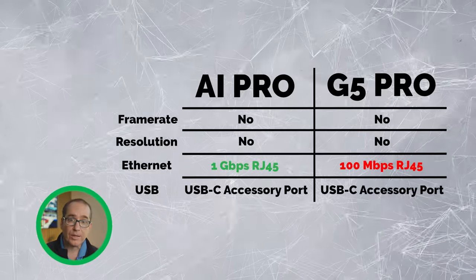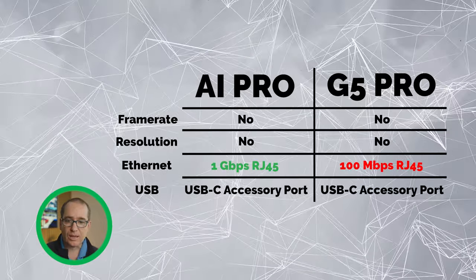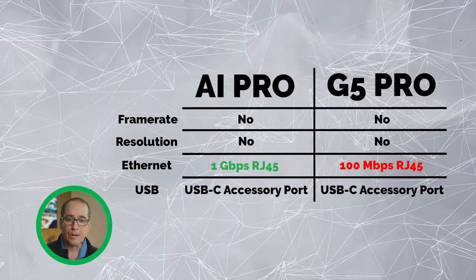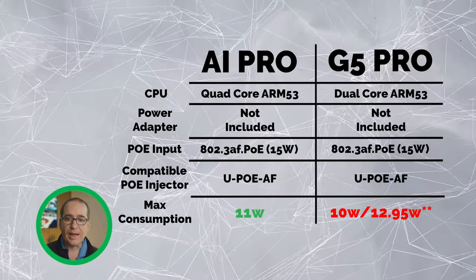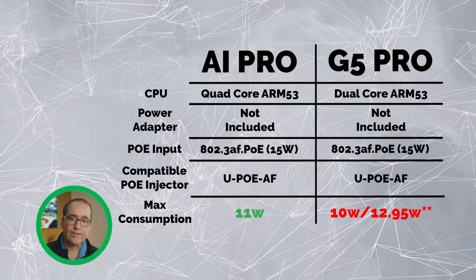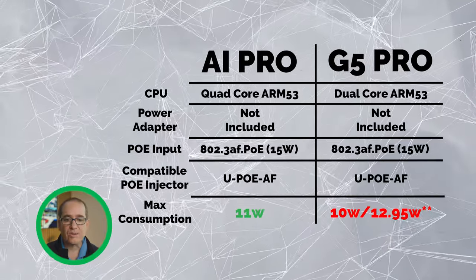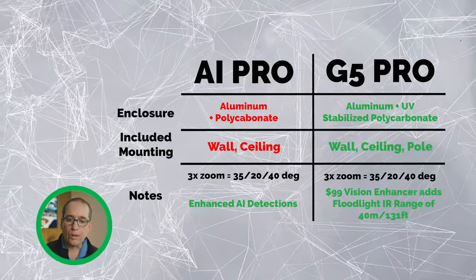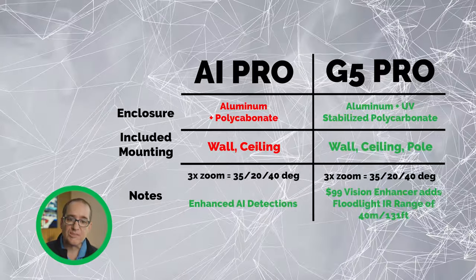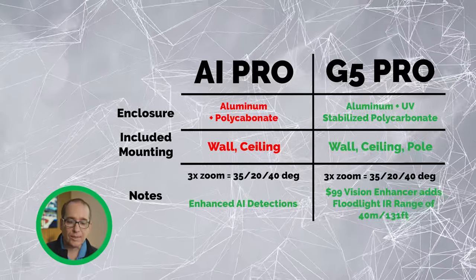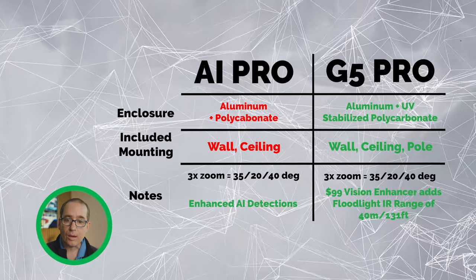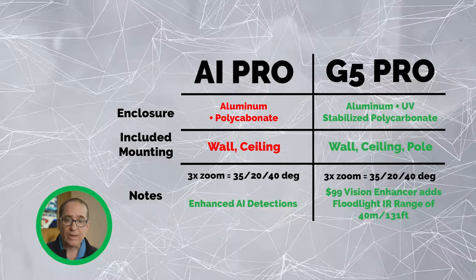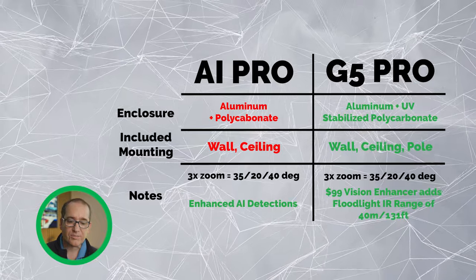The AI Pro has two-way audio, which is definitely an advantage over the G5 Pro if that's important to you. The AI Pro has the quad-core ARM53 processor versus the dual-core ARM53 processor in the G5 Pro. The only other differences are that the G5 Pro comes with a pole mount in the kit, the AI Pro has the AI detections, and the G5 Pro has the image enhancer — the vision enhancer.